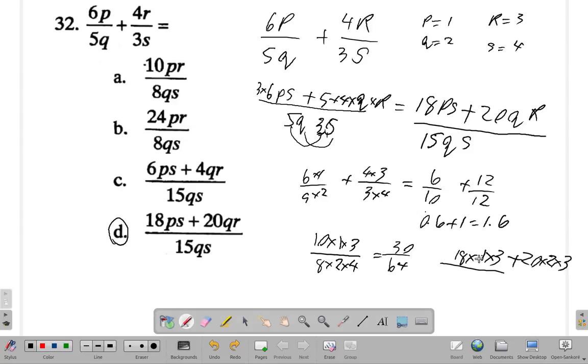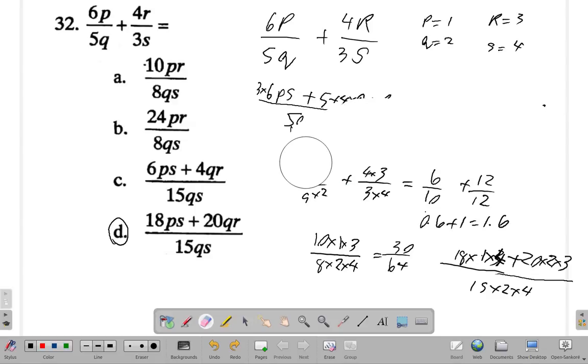So 18 times p which is 1 times s. No, s is 4. It should have been 4. Times s which is 4 plus 20 times q, q is 2 times r which is 3, all over 15 times q is 2 times s which is 4. Remember this is a tryout if you absolutely don't remember or don't know how to add the fractions.